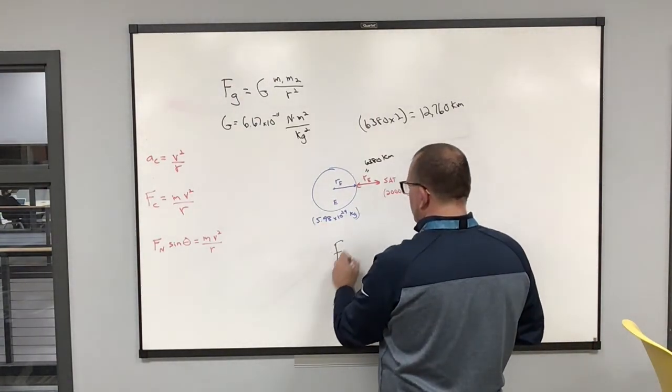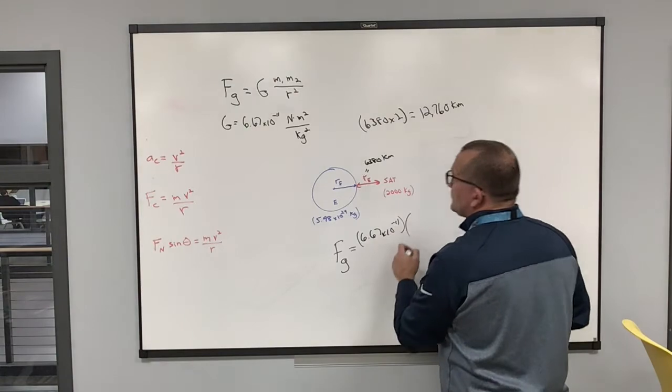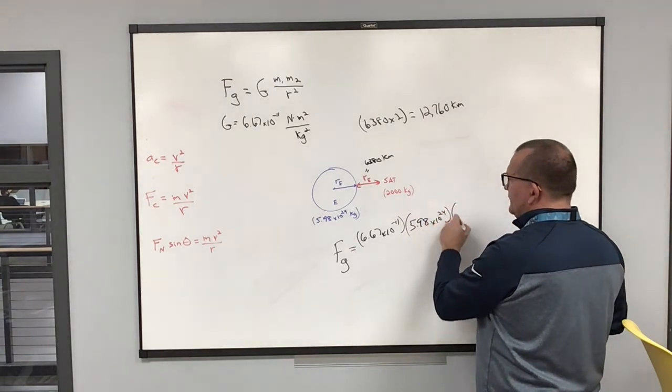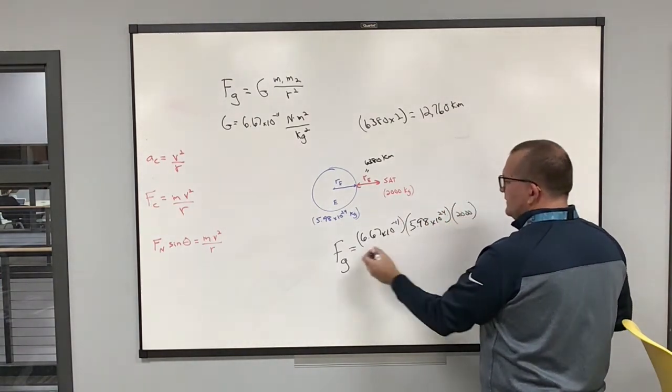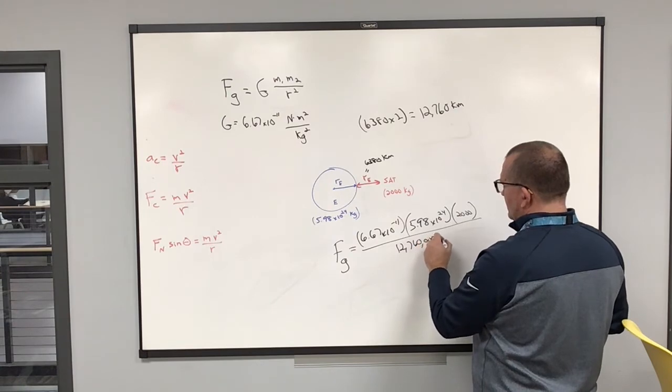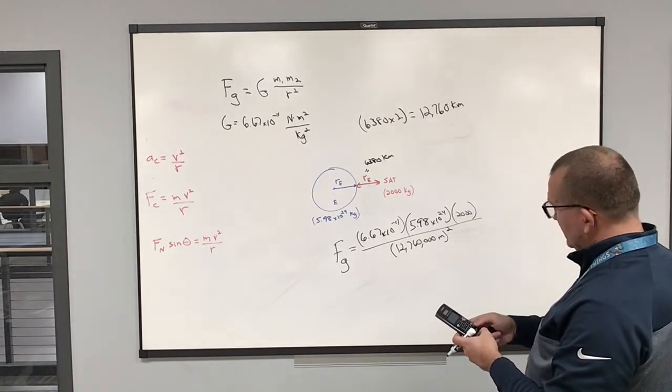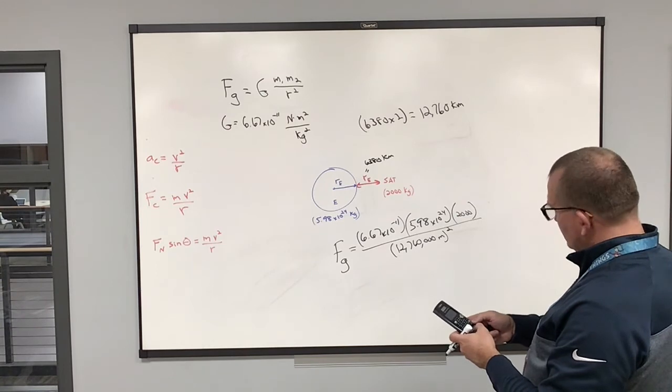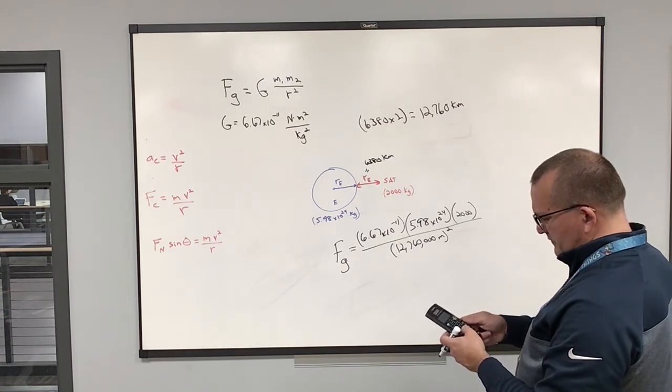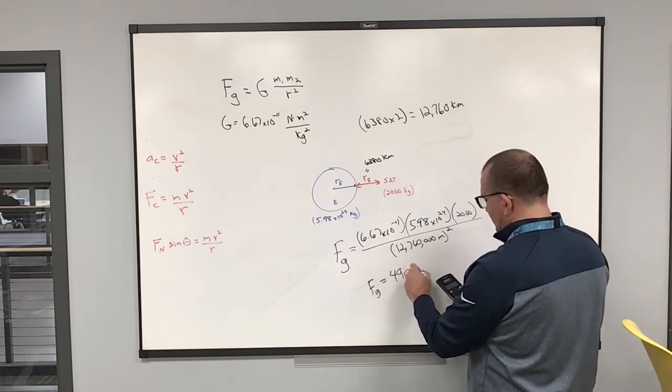And we want to find the force of gravity. So, F_g equals my constant, 6.67 times 10 to the negative 11, multiplied by my masses, mass of the earth, big number, mass of the satellite, not as big, divided by the distance. And I want it to be meters. So, and square it. And the force of gravity on this is, I'm just going to round it to 4900 newtons.